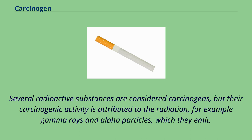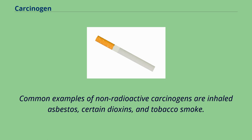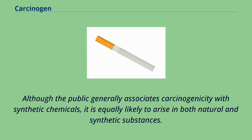Several radioactive substances are considered carcinogens, but their carcinogenic activity is attributed to the radiation — for example gamma rays and alpha particles — which they emit. Common examples of non-radioactive carcinogens are inhaled asbestos, certain dioxins, and tobacco smoke. Although the public generally associates carcinogenicity with synthetic chemicals, it is equally likely to arise in both natural and synthetic substances.